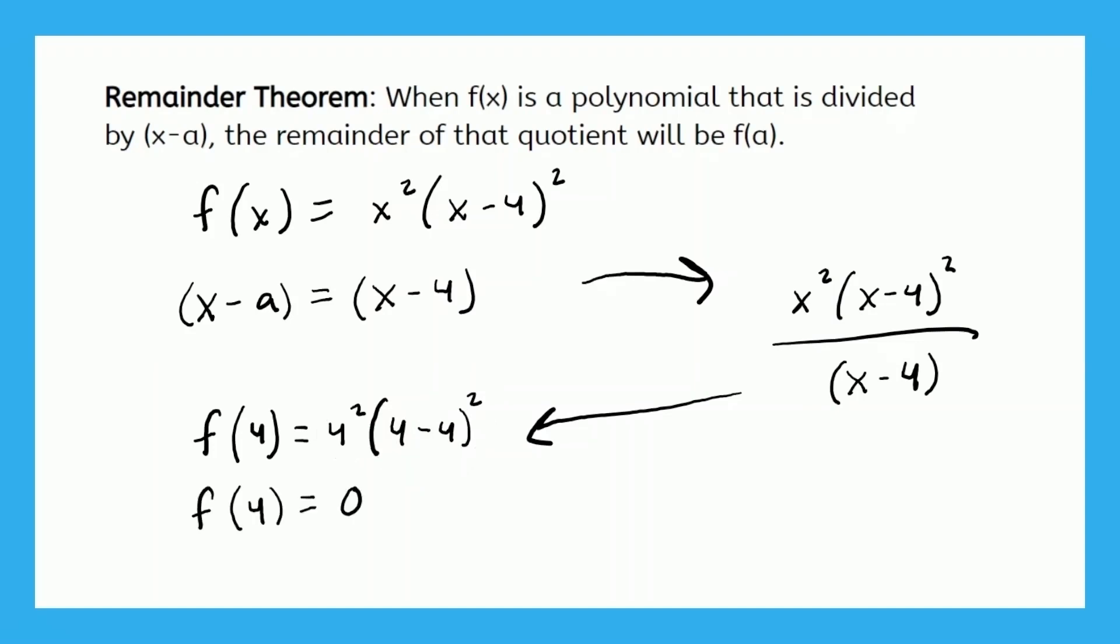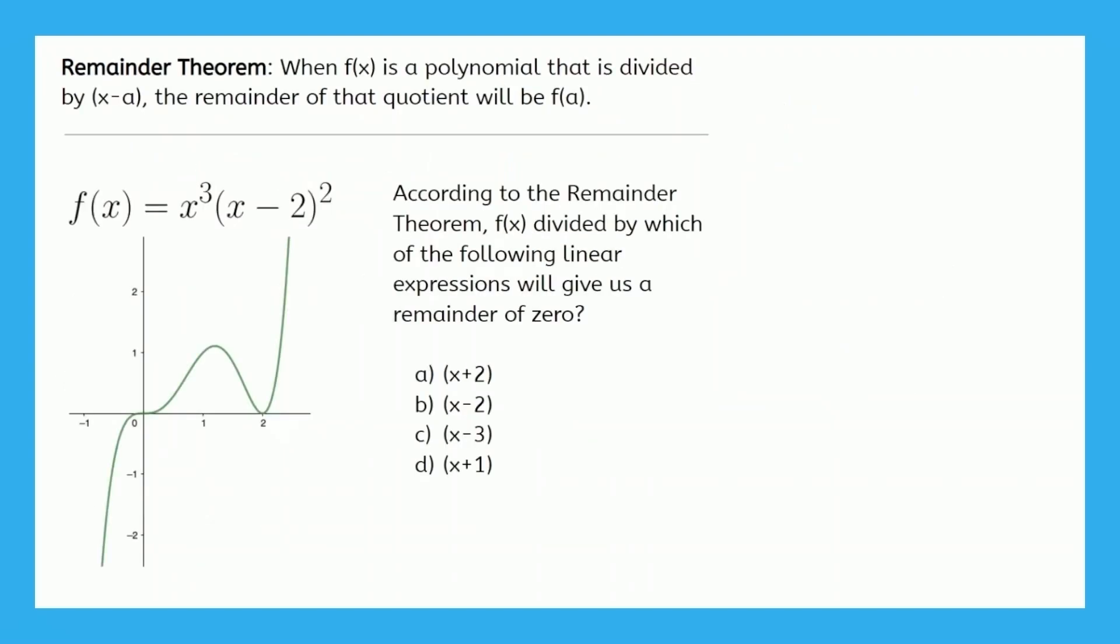And as we talked about, f(4) is f(a). And f(a) is the remainder. So that means that the remainder of this quotient is 0. Okay, so why is this significant? Let's look at a situation that also includes a graph. So here we have the remainder theorem again. And now we're going to try to answer this question based on what we just talked about.